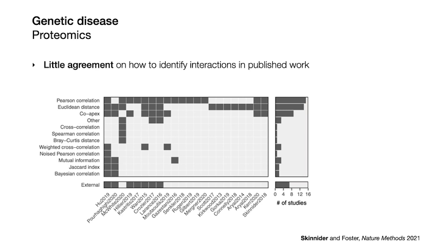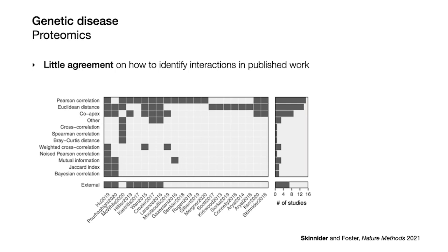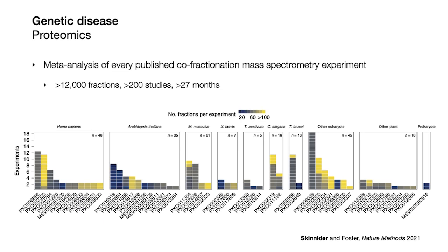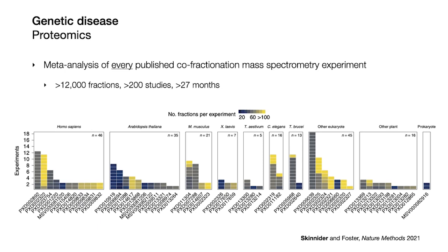I wasn't the first person to tackle this problem. Other people had collected co-fractionation data before Nick and had to find a solution too. But I realized that in the literature there was surprisingly little agreement on the best way to identify interacting protein pairs in co-fractionation data — people couldn't even agree on the best way to score how similar two protein elution curves were. I decided the only way to solve this would be to reanalyze every co-fractionation experiment ever published. I downloaded more than 12,000 mass spectrometry files from 206 co-fractionation studies, which collectively had taken more than 27 months of uninterrupted mass spectrometry time to acquire. I then reanalyzed all of these experiments with the same computational pipeline, ending up with a dataset of more than 11 million measurements of protein abundance.